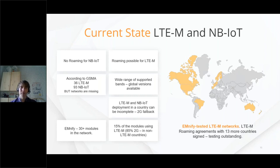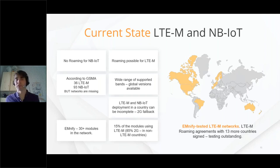LTE-M and narrowband IoT deployments are usually quite incomplete. Even if I'm highlighting specific countries, it doesn't mean there's LTE-M and narrowband coverage everywhere. There are whole specific areas that have not been updated. We see a lot of 2G fallback. To give you an idea, we have 30-plus modules for LTE-M and narrowband IoT in our network, and 50% are using LTE-M, whereas 85% are using 2G because they are deployed in non-LTE-M countries. The device manufacturer just wanted to be already future-proof with the new technology while still having the possibility to fall back to 2G to make sure the device really works wherever it is shipped.